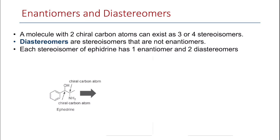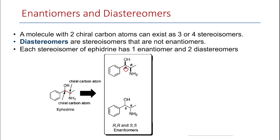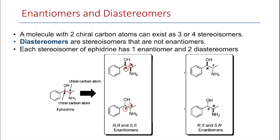Let's have a look at ephedrine as an example. It has two chiral carbon atoms — the first and the second carbon. We have four possible stereoisomers based on the different combinations of configuration at both carbon atoms: R,R; S,S; R,S; and S,R.